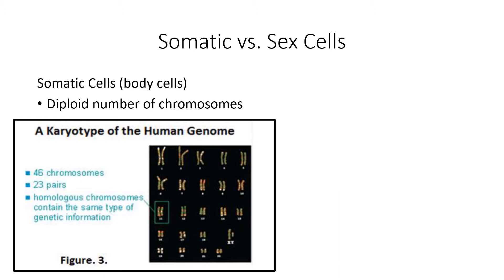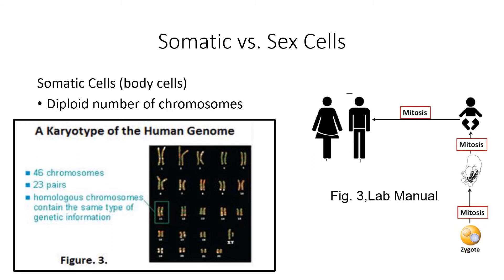Somatic cells reproduce by mitosis. So a fertilized zygote — when an egg and a sperm unite, you have this single cell called a zygote. And then through a process of mitosis and cell division, that one cell reproduces into something around a trillion cells by the time of birth, with all of the cells making up the fetus having 46 chromosomes, 23 pairs, or diploid number.